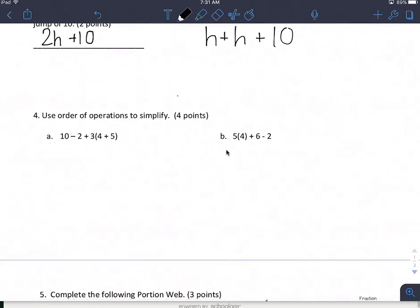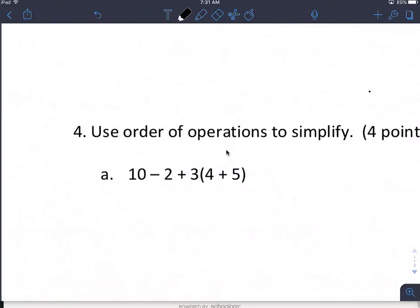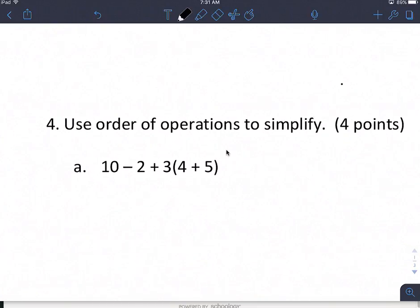All right, use order of operations to simplify, starting with A. I'm going to look first and see, do I have any parentheses? Well, I do have parentheses. I have 4 plus 5 in parentheses. So this is going to become 10 minus 2 plus 3 and then inside the parentheses I have 9. I don't have any exponents.